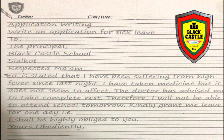Now as you can see, it starts from 'To,' then a comma. 'The Principal,' comma. 'Black Castle School,' comma. 'Sial Court,' full stop. The first letters of the first words are capital. So the letters of the first words should be capital. The first three lines should end with a comma, and then Sial Court ends with a full stop.